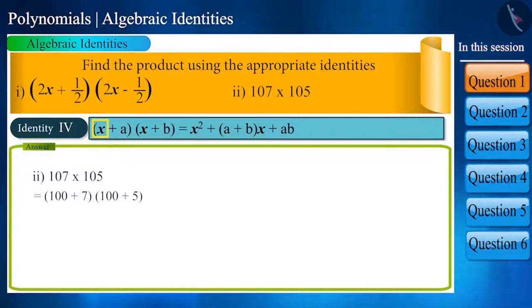Where x is 100 and a and b are 7 and 5 respectively. So 107 × 105 would be 100² + (7 + 5) × 100 + 7 × 5, which becomes 10,000 + 1,200 + 35, that is in total 11,235.